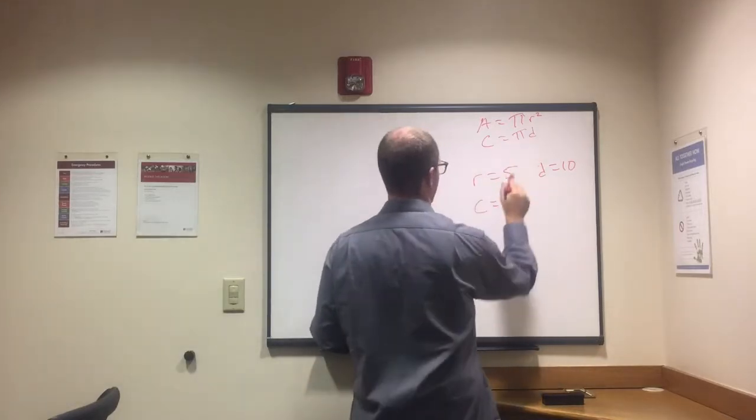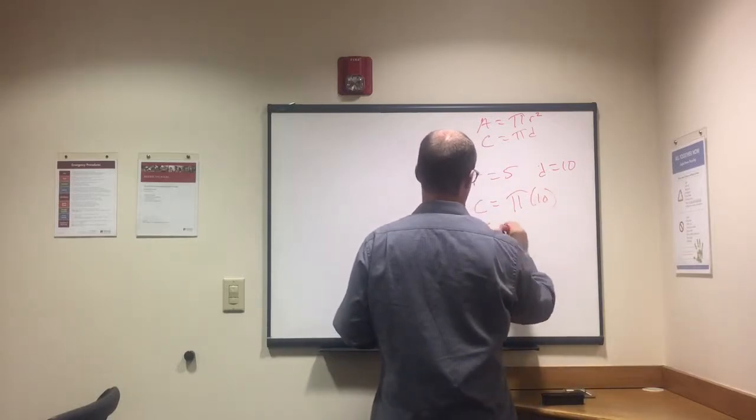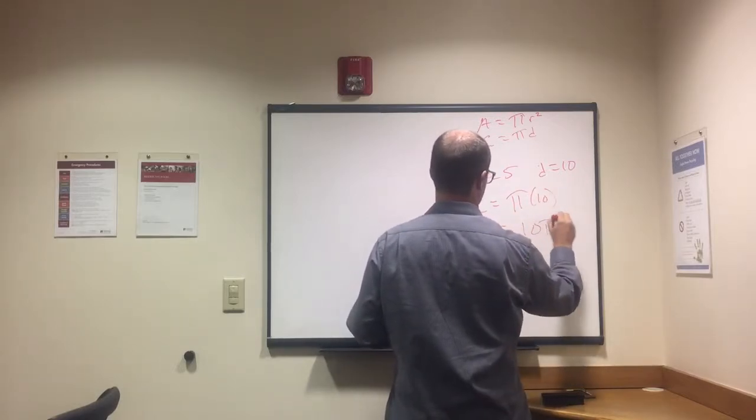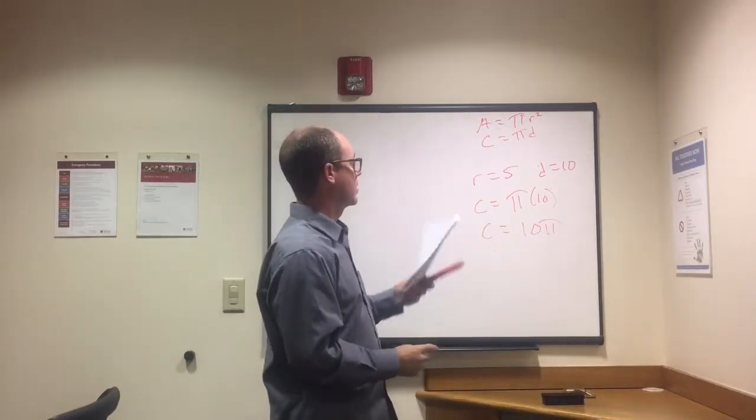Circumference equals pi times diameter, pi times 10. This will usually be written as 10 pi.